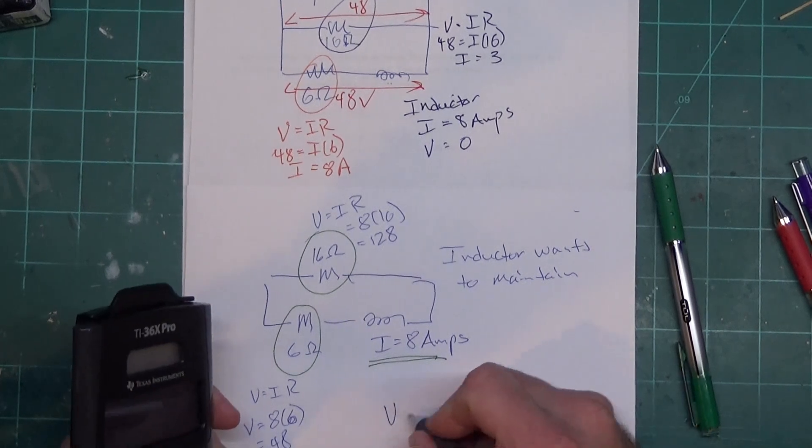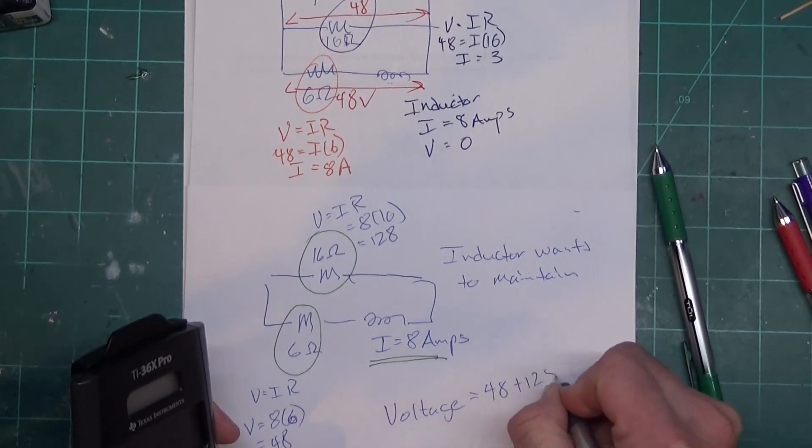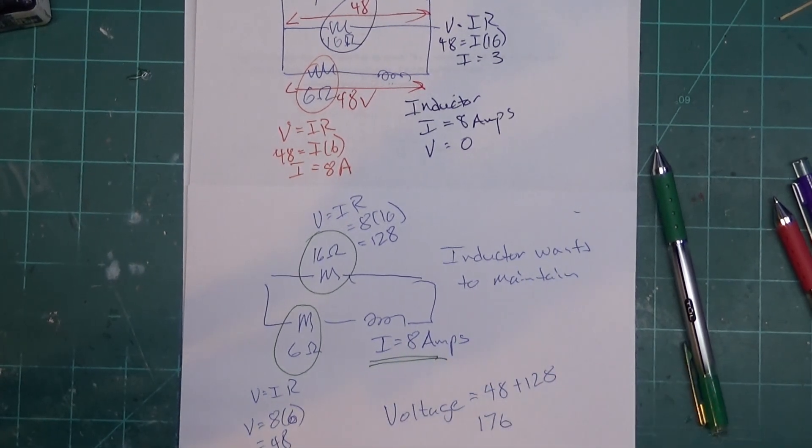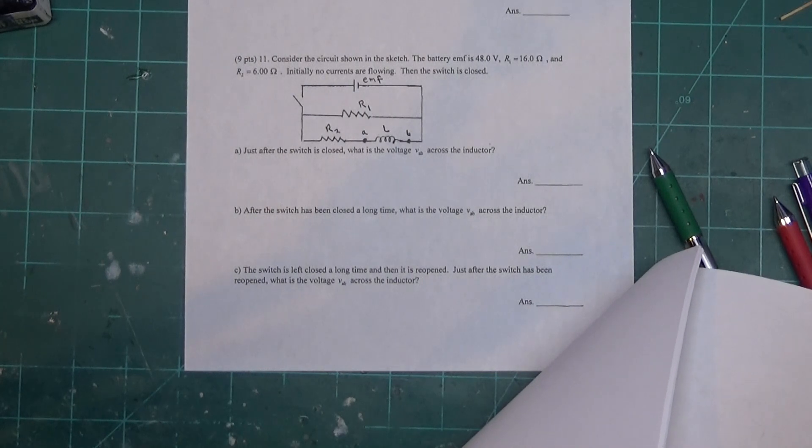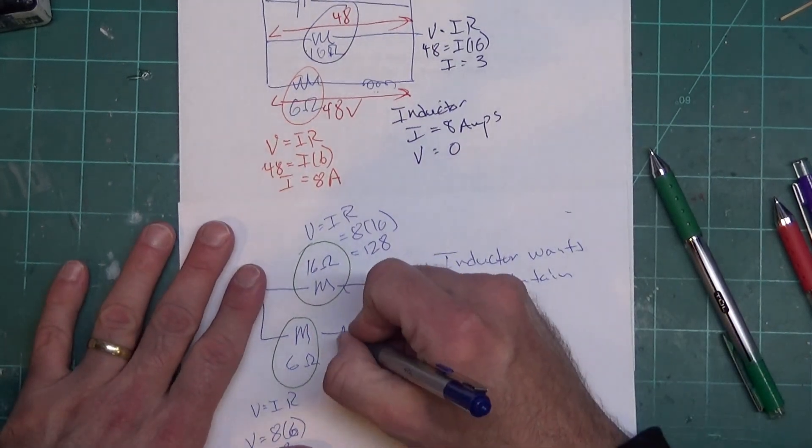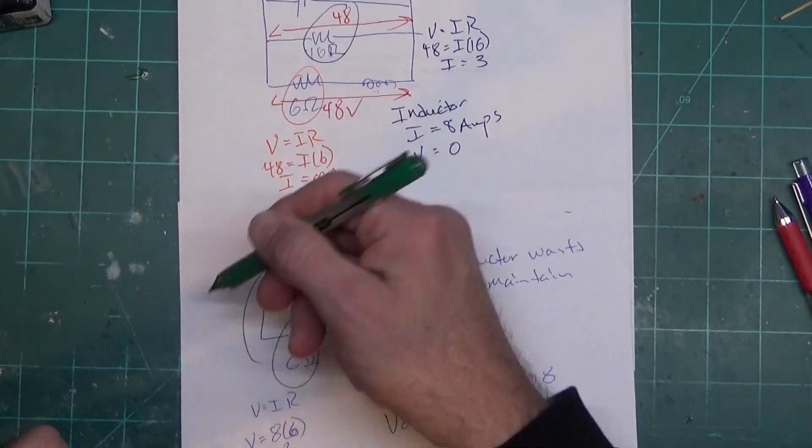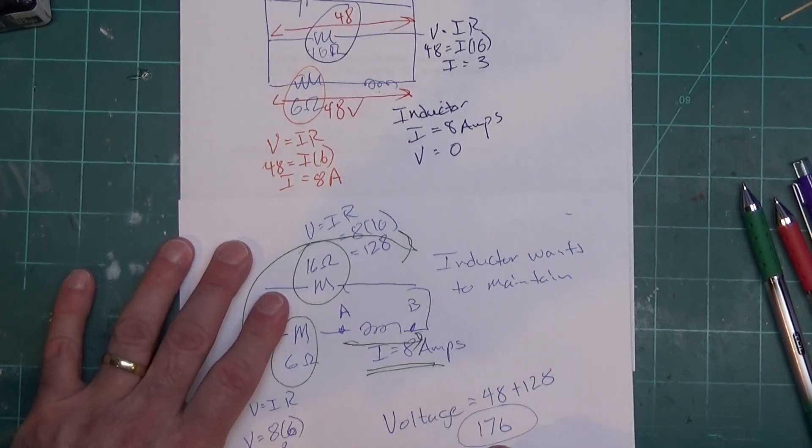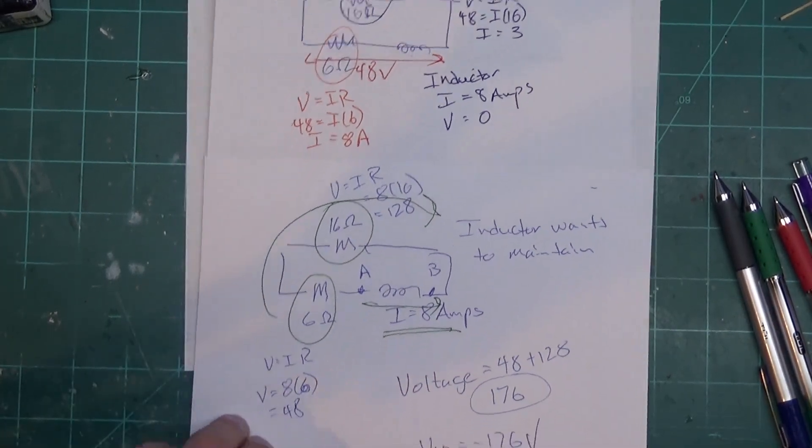Okay, so the voltage around the loop is going to be 48 plus 128 which comes out to 176. Now the question is then, let's make sure we're reading the question correctly so I'm going to remove the paper. The switch is closed a long time, then the switch has been opened. What's the voltage AB across the inductor? So we're going from A to B over here. Now I'm going around the loop this way. We're going to go back across this way. No matter how you look at it though, the voltage, the output of inductor is 176 volts, so V_AB should be negative 176.